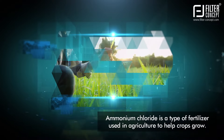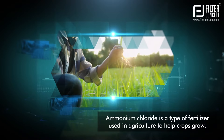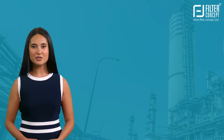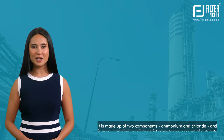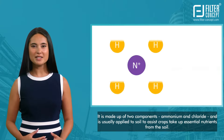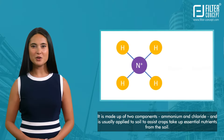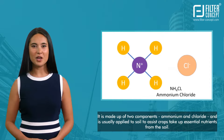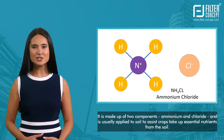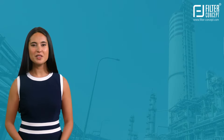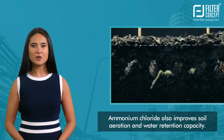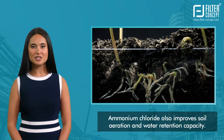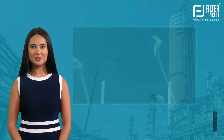Ammonium chloride is a type of fertilizer used in agriculture to help crops grow. It is made up of two components — ammonium and chloride — and is usually applied to soil to assist crops in taking up essential nutrients. Ammonium chloride also improves soil aeration and water retention capacity.